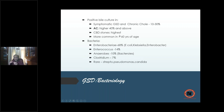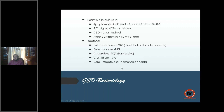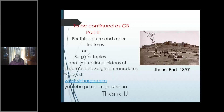Bacteria identified: Enterobacteriaceae most common at 68 percent — E. coli, Klebsiella, Enterobacter; Enterococcus 14 percent; anaerobes 10 percent — Bacteroides, Clostridium 7 percent; rarely Pseudomonas and fungal Candida. These represent the bacteriological spectrum of gallbladder stone disease. We'll finish here and next time start with acute cholecystitis as that is an extensive topic. Thank you.